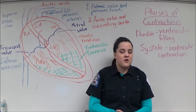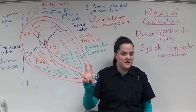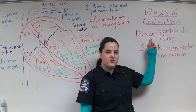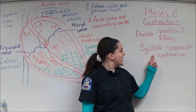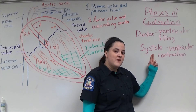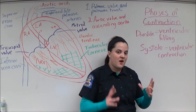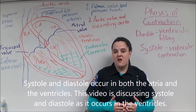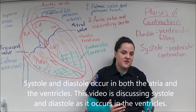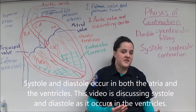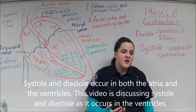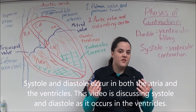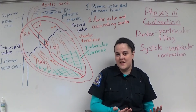Cardiac blood flow occurs in two distinct phases: diastole, which is when the ventricles are filling with blood, and systole, which is when the ventricles are contracting. When this occurs in the heart, systole or diastole occur in both sides of the heart at the same time. So if the right ventricle is in diastole, the left ventricle is also in diastole.